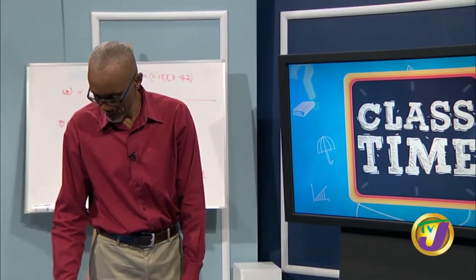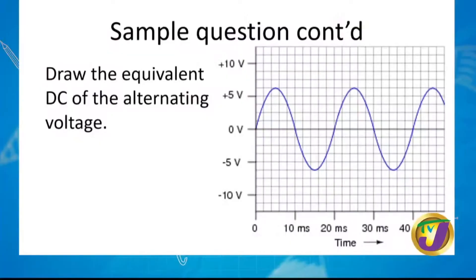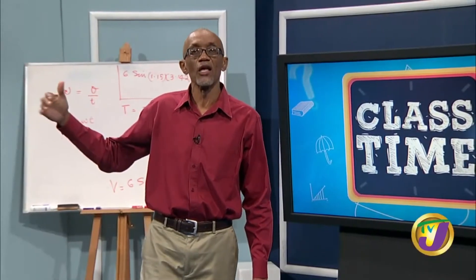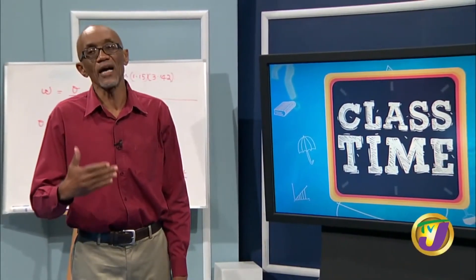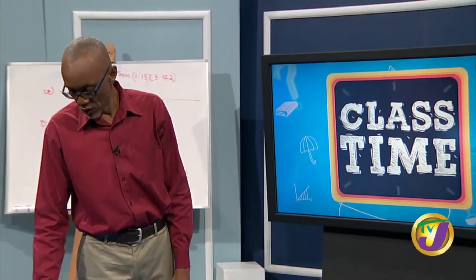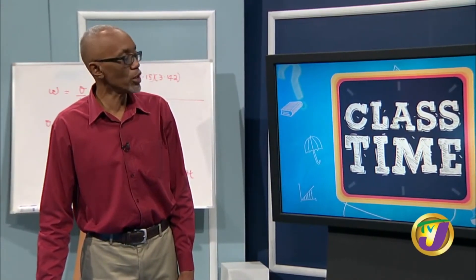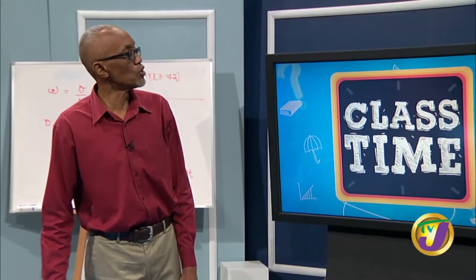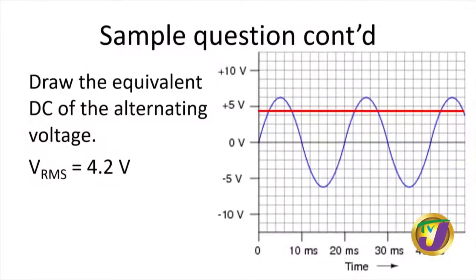The same sample question also asks us to draw the equivalent DC of the alternating voltage. We draw a straight horizontal line, since DC doesn't change direction. This line is drawn at the RMS voltage level of 4.2 volts. This line represents the DC equivalent of the alternating voltage — the DC equivalent is the same as the RMS voltage.